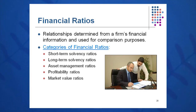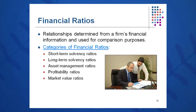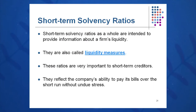We're going to break these ratios into five categories. The first category is short-term solvency ratios — basically liquidity measures. How liquid is the company? As mentioned in the last session, one of the lenses we apply when looking at a balance sheet is liquidity: how fast can we turn assets into cash without loss of value? These ratios are very important to short-term creditors.